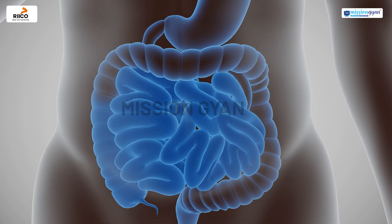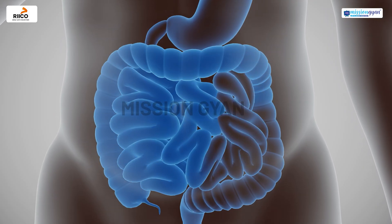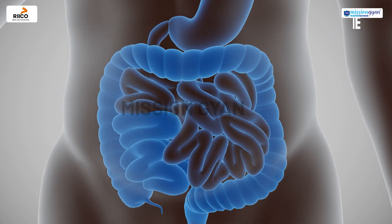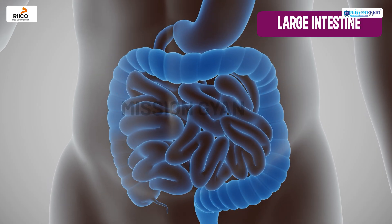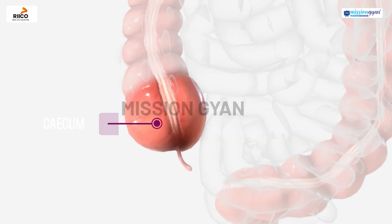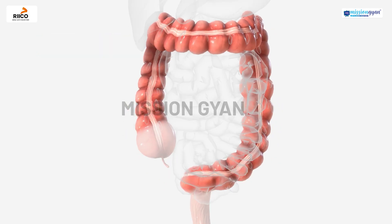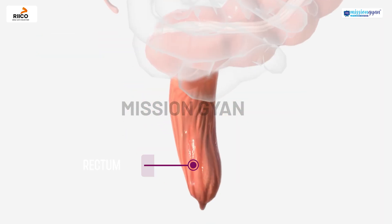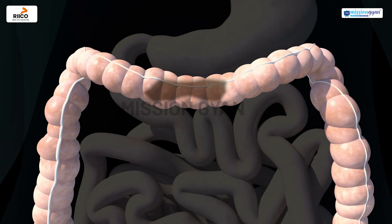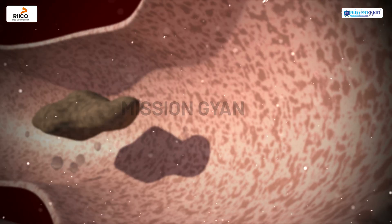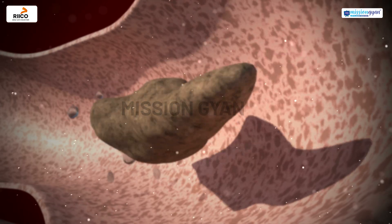The undigested food moves into the large intestine, which is divided into the cecum, colon, and rectum. The large intestine absorbs water and minerals from the waste, turning it into solid feces.